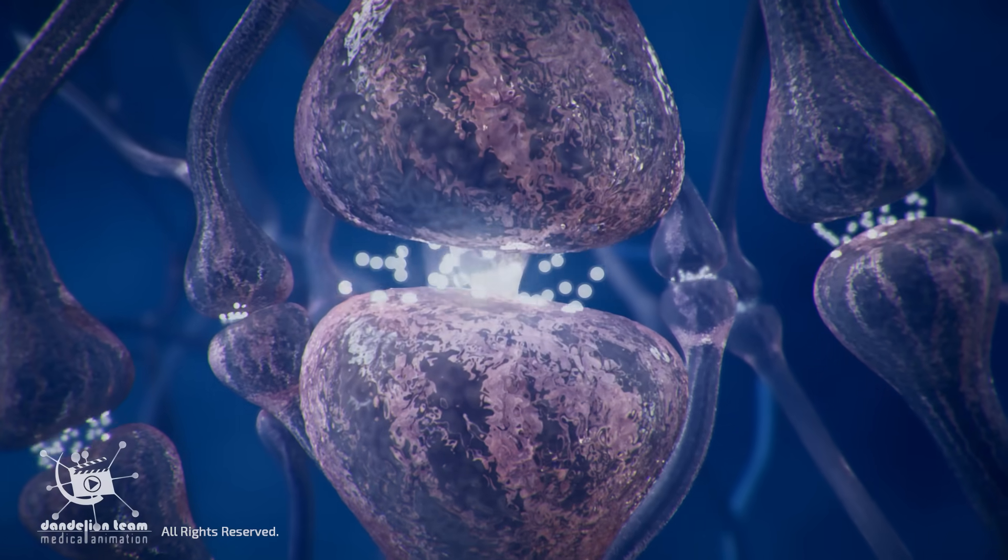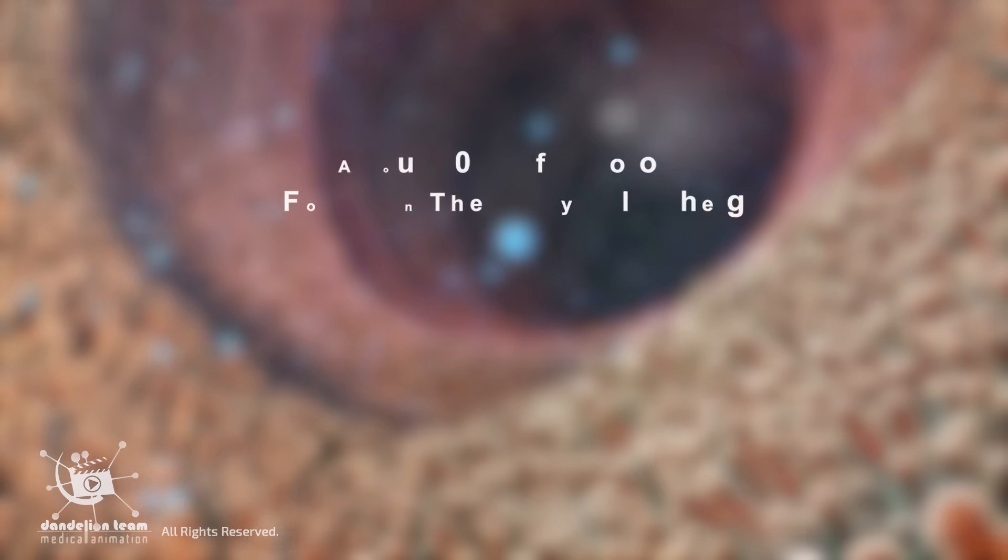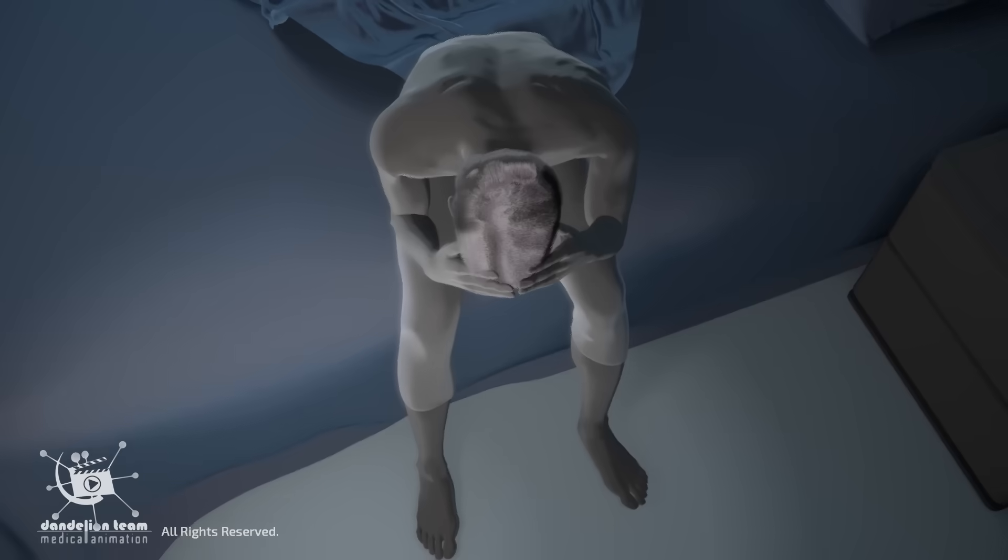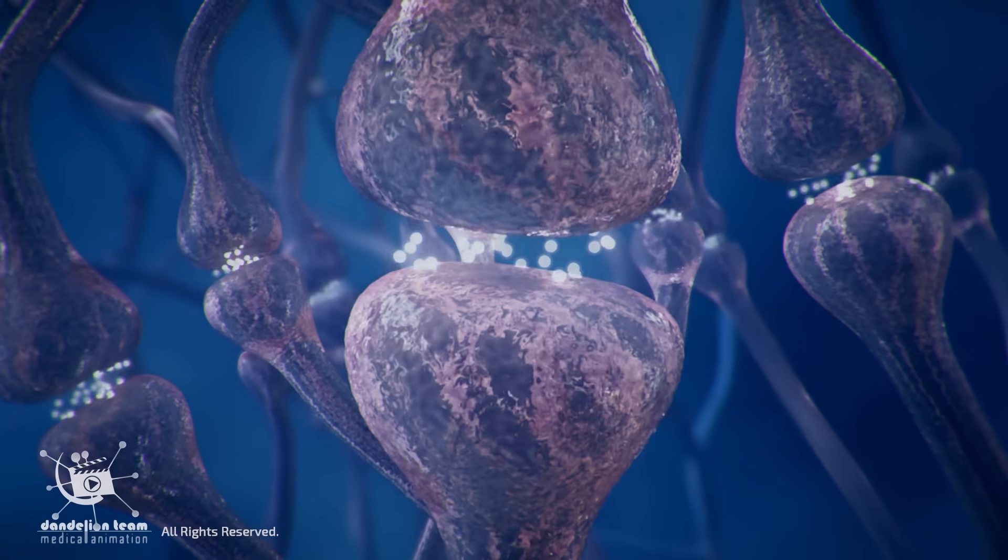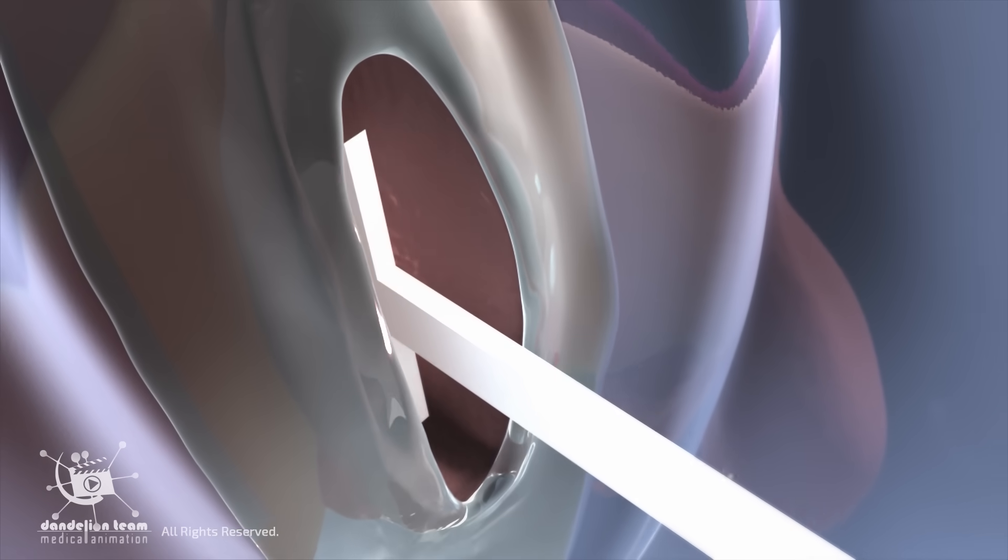Serotonin is a naturally occurring substance in the body that is produced by nerve cells. It plays a crucial role in regulating mood, emotions, sleep, and sexual desire. Higher levels of serotonin in the brain can lead to a longer time until ejaculation.